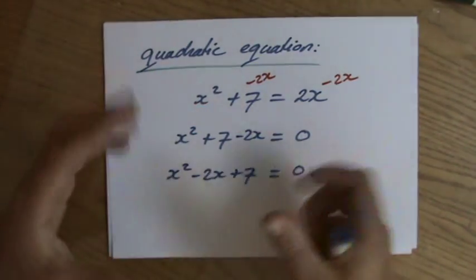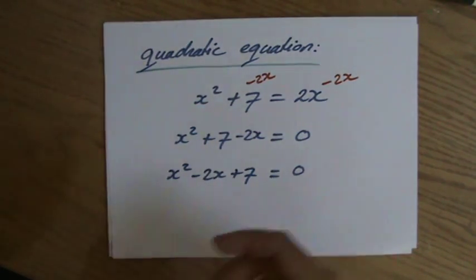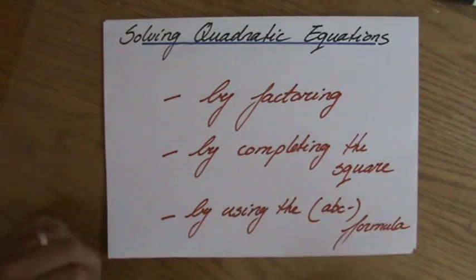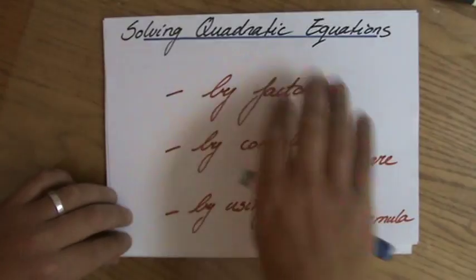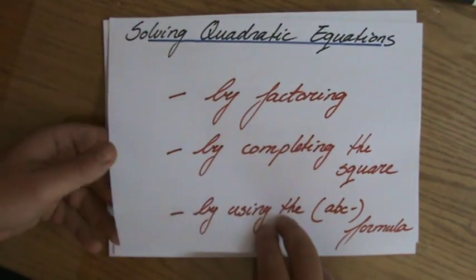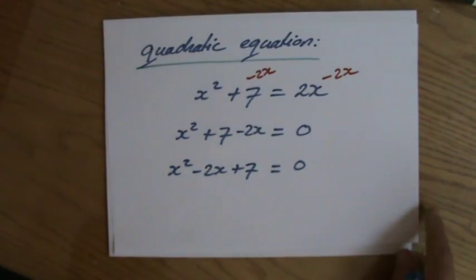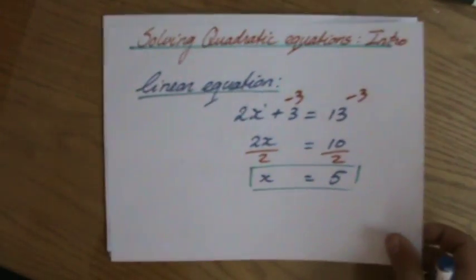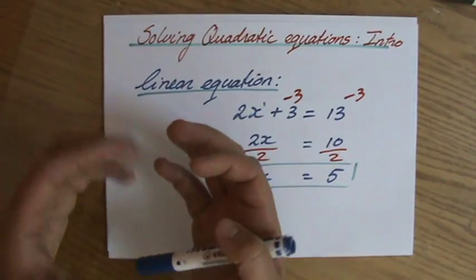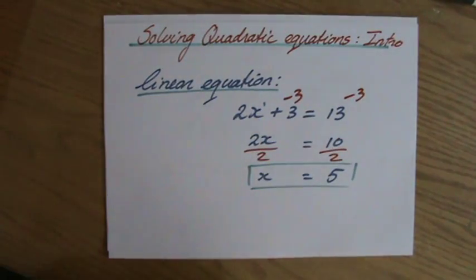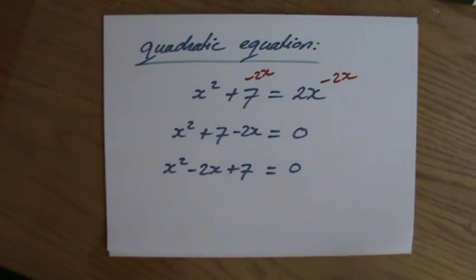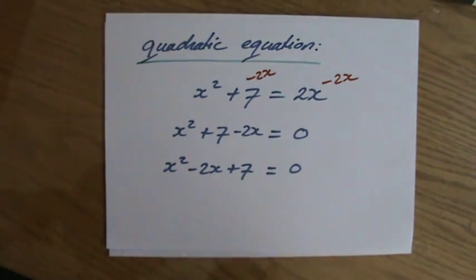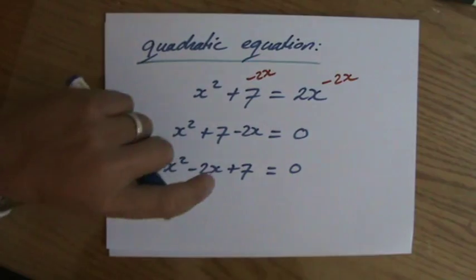And once you have rearranged it like this, then you will be able to solve it either by factoring, or by completing the square, or by using the ABC formula. Or you can use all three of them if you want. If you really are enjoying this. But quadratic equation always equal it to 0. Unlike a linear equation, where you isolate x and the rest on the other side of equal sign, a quadratic equation equal it to 0. Next video, I'm going to start about how to solve these quadratic equations by factoring. I'll see you there.